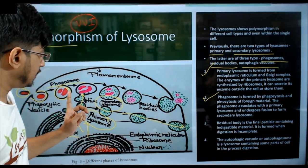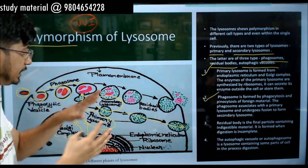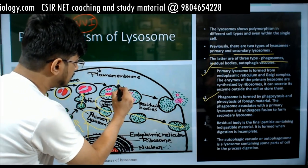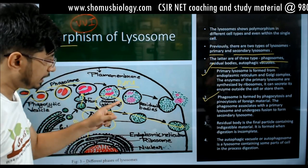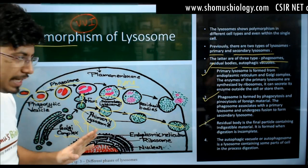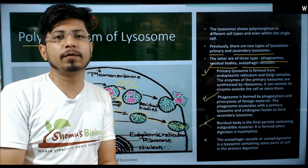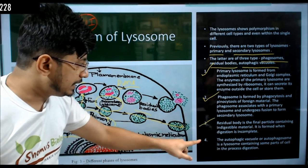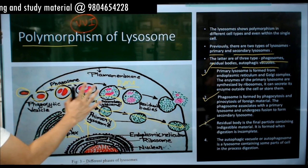Once a secondary lysosome forms, it begins digesting the engulfed component — whether lipid, nucleic acid, or protein. After digestion is complete and all components are degraded to their bare essentials (amino acids from proteins, monosaccharides from sugars), the vesicle is known as a residual body. The residual body is the final particle containing indigestible material. Autophagic vacuoles (autophagosomes) are lysosomes containing parts of the cell itself in the process of digestion.